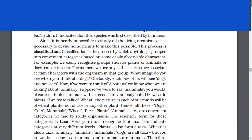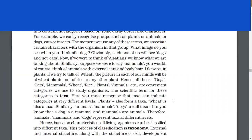Obviously, each one of us will see dogs and not cats. If we were to say mammals, you would think of animals with external ears and body hair. Likewise, in plants, if we try to talk of wheat, the picture in each of our minds will be of wheat plants, not rice. Hence, all these - dogs, cats, mammals, wheat, rice, plants, animals - are convenient categories we use to study organisms. The scientific term for these categories is taxa.